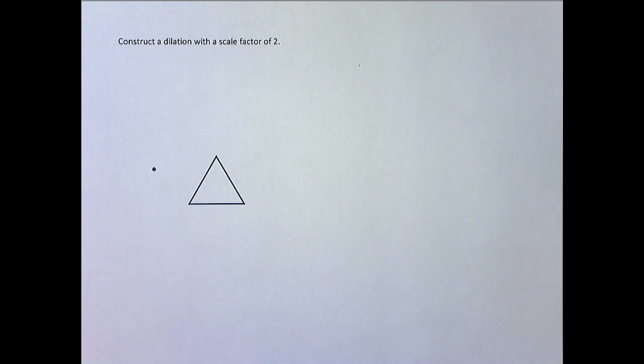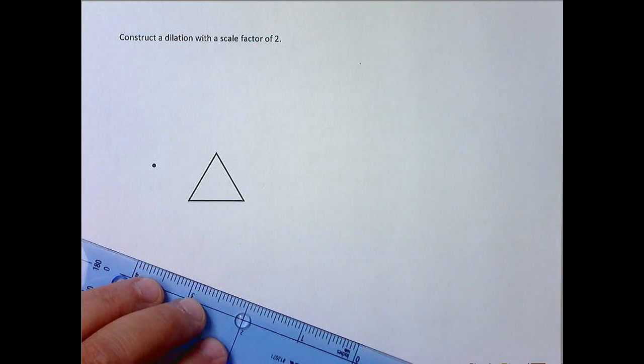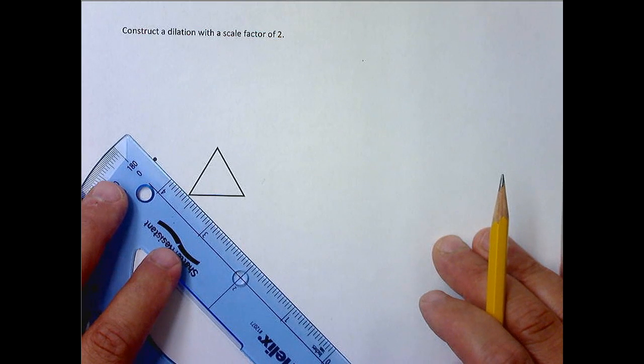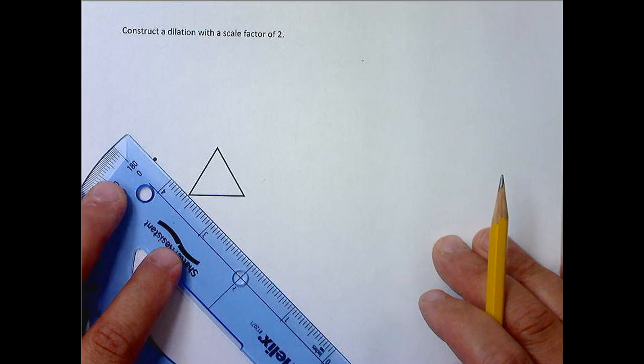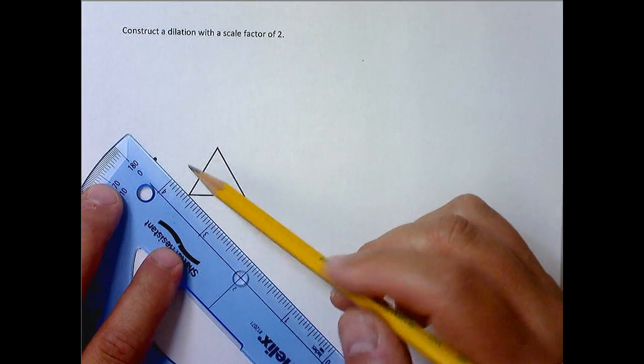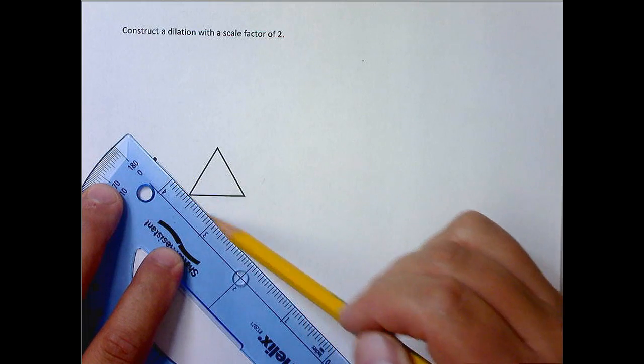And the first thing you're going to want to do is draw three lines. Lightly, of course, so it's not getting in your way, but the first line, second line, third line, they all need to be from your center of the dilation to the three vertices of this triangle.